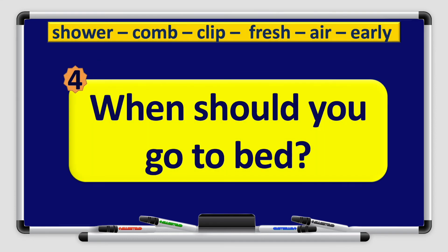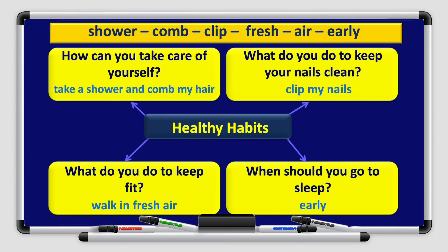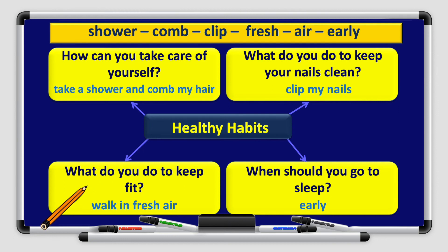Question number four: When should you go to bed? The answer from the word list is: early. Now let's go through our graphic organizer for the healthy habits paragraph. How can you take care of yourself? Take a shower and comb my hair. Keep nails clean? Clip my nails. Keep fit? Walk in fresh air. When to sleep? Early.